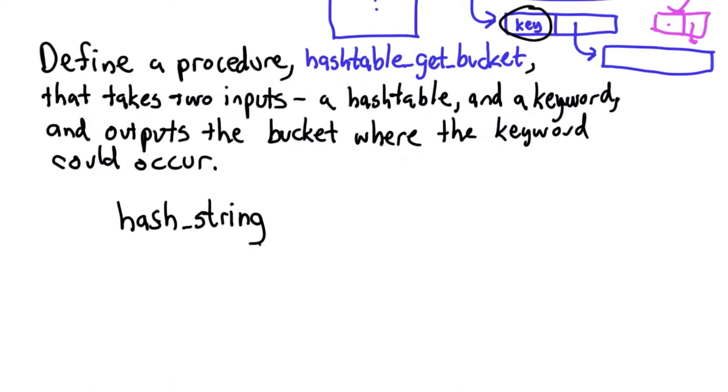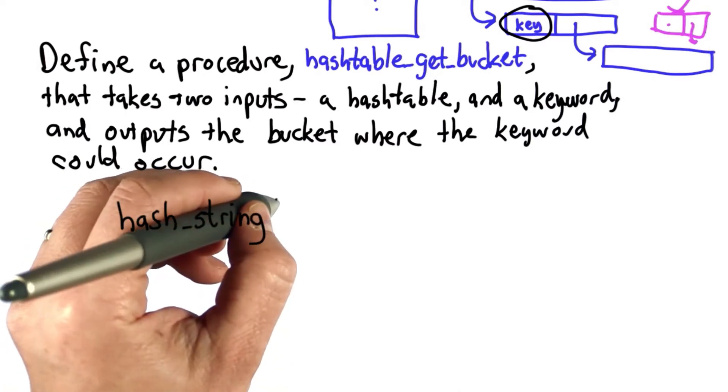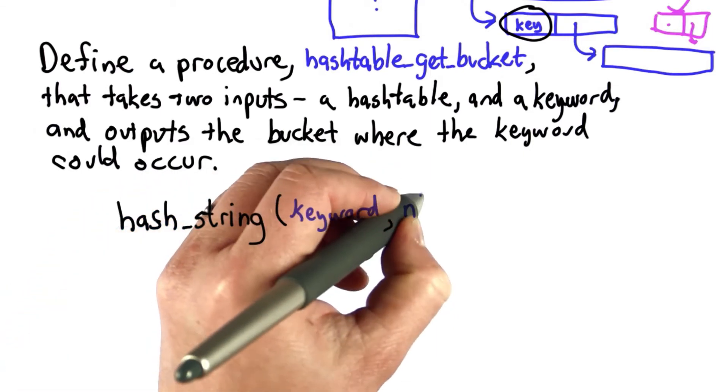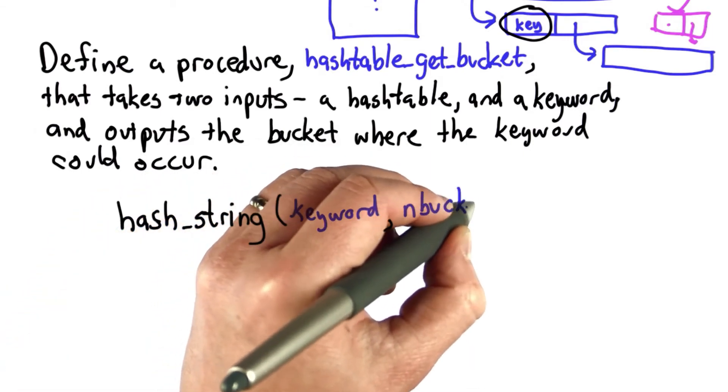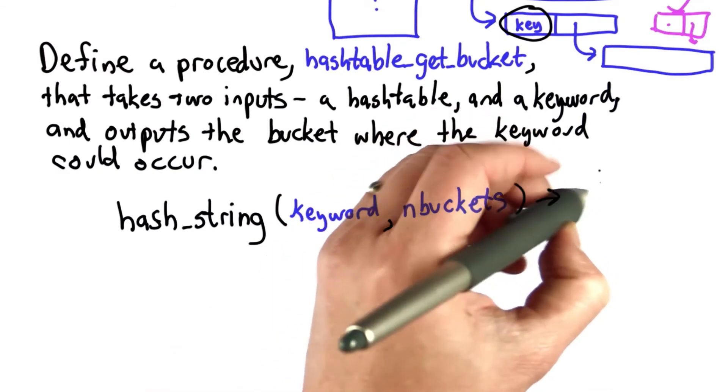One useful function is the hash_string procedure you defined earlier. hash_string takes two inputs: a string (the keyword) and a size (the number of buckets), and it outputs the number which is the index of that bucket.